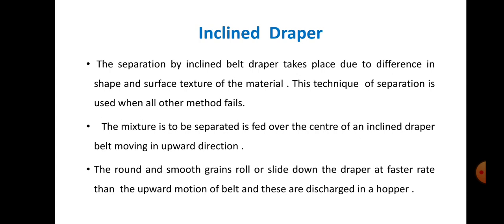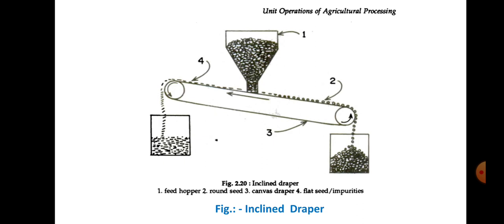The round and smooth grains roll or slide down the draper at a faster rate than the upward motion of the belt, and these are discharged into a hopper. Because of their roundness or surface texture, they roll down the belt surface due to the inclination of the draper belt. Number one in the figure indicates the feed hopper, located just over the center of the rotating draper belt.